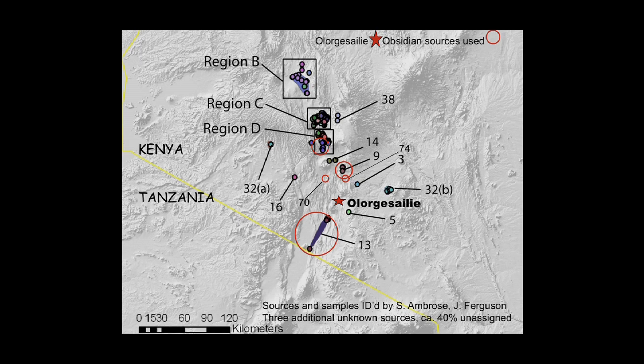The point Rick showed you actually fits back onto a Lavallois core — so it isn't just the finished artifacts, it's the whole chaîne opératoire. Where is the material coming from? At Elorga Sali, we have multiple sources: some 40 kilometers away, some 60, coming from at least four different directions. We still have 40% of the samples we've looked at where we don't know the source. So there's great diversity in where the material is coming from and a great deal of material at the site.